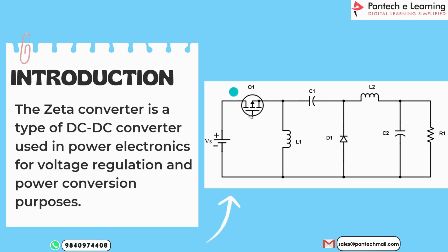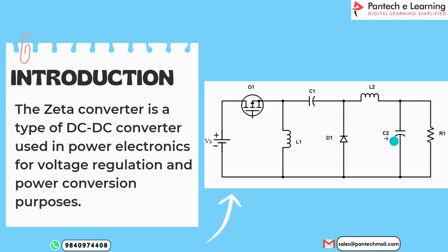This is the block diagram of the Zeta Converter. This Zeta Converter provides a positive output voltage for an input voltage that varies above and below the output voltage. This Zeta Converter needs two inductors and two capacitors, and also one diode and one switch. Sometimes this series capacitor is called a flying capacitor. The basic operation is that the output voltage can be greater than or less than the input voltage, and it is mainly used for obtaining regulated output voltage.